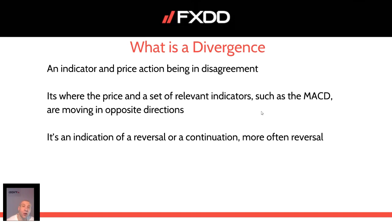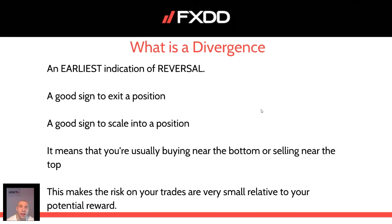When we talk about regular divergence, we usually say that it is an earliest indication of a possible reversal. It can also be a good sign to exit a position or to scale into a position. The problem with divergence is that the price usually tends to respect it initially, but then it can turn the other way. You need to respect a set of rules before trading divergence and follow the rules step by step.